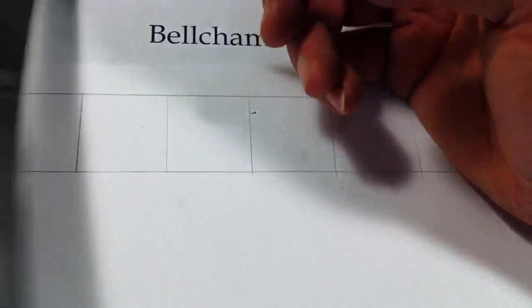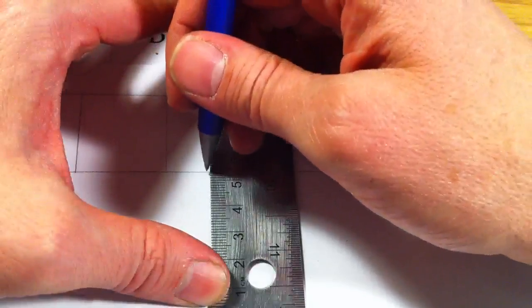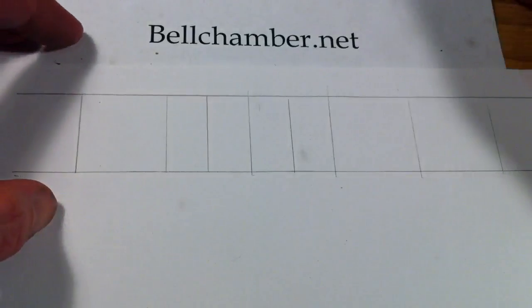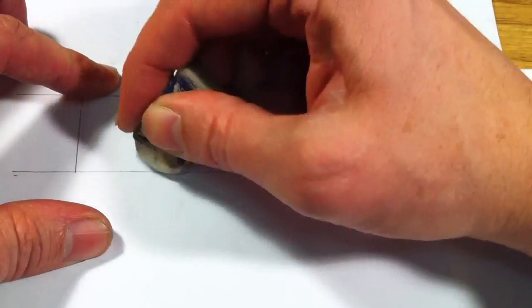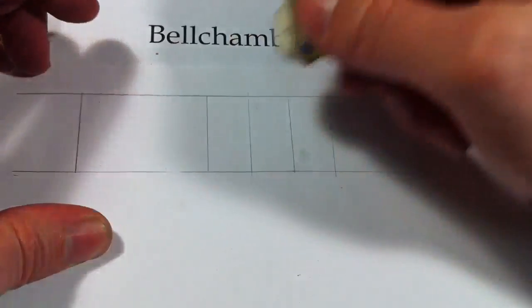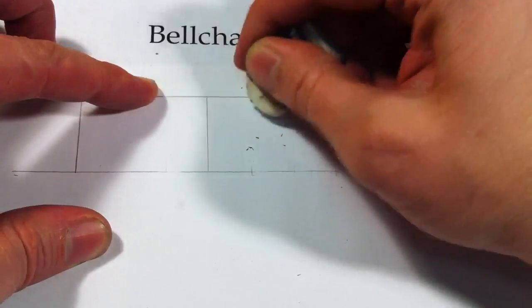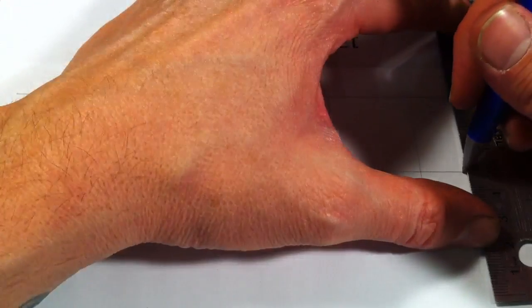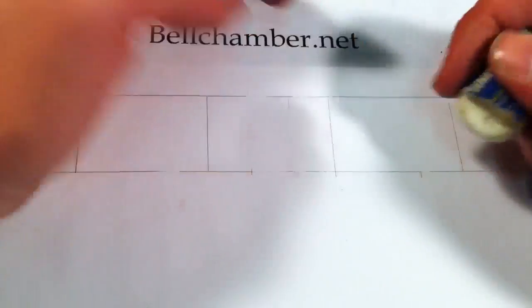Draw these lines fairly lightly because you are going to erase them in order to get that pattern. Now, starting from your first line and the second grid, score a line in between. The reason why is because we are going to be doing a basic two by three pattern. Just erase those two lines there. Do the same down here in order to get a two by three grid.